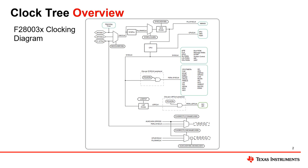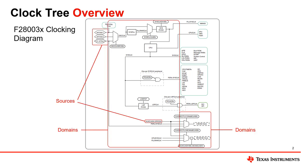Specifically looking at the F28003 microcontroller as an example, we see there are multiple sources, domains, and destinations that each have different requirements. While it is possible to manually input all of these values, there is another way to make the process more efficient.